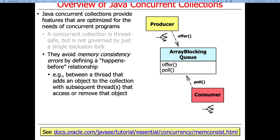An example is where a thread adds an object to a collection. A producer puts a string into an ArrayBlockingQueue, and we want to ensure that when a consumer comes along to remove that item, it's actually visible. These happens-before relationships are defined by the underlying concurrent collections. Some concurrent collections also let you wait for preconditions to be fulfilled — you can wait while the ArrayBlockingQueue is empty or full. The blocking queues provide this waiting behavior, enabling producer-consumer-like interactions.